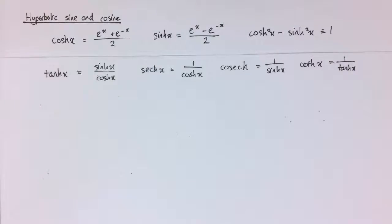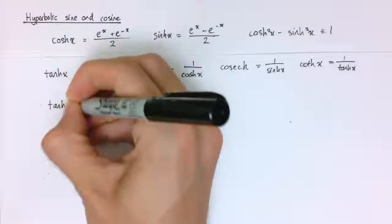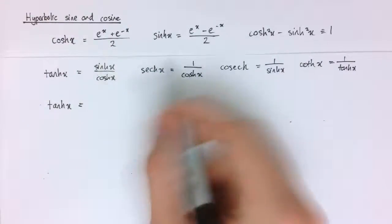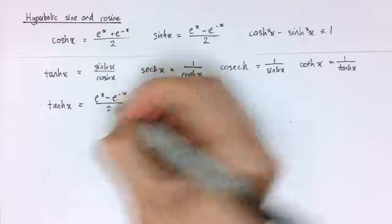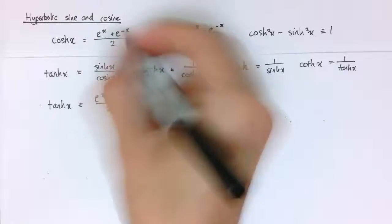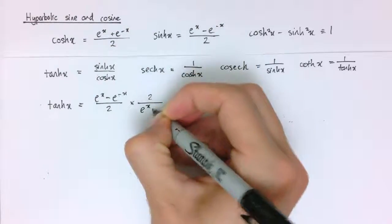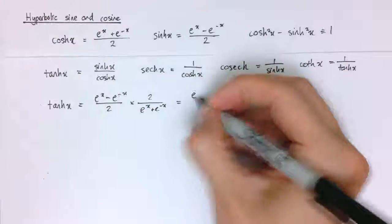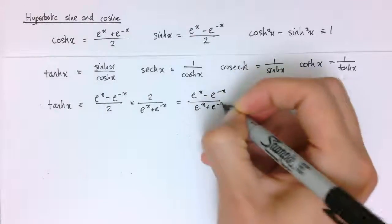And we can either write them like this or we can also write them in exponential forms as well. For example, one particularly useful exponential form is to write the hyperbolic tan using these definitions. So I've got sinh divided by cosh, so that's e to the x minus e to the minus x over 2, and then divided by cosh of x. So I'm going to turn that upside down and multiply, so 2 over e to the x plus e to the minus x. The 2's cancel, so it leaves e to the x minus e to the minus x, divided by e to the x plus e to the minus x.